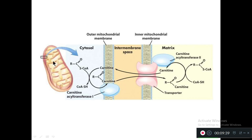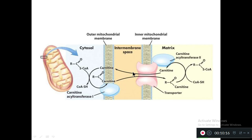This diagram represents the cytosol and the mitochondria, showing the entry via the carnitine shuttle. The outer and inner mitochondrial membranes are shown, along with the transporter that allows the carnitine shuttle to travel through. The CoA is separated in the matrix, and carnitine returns via acyltransferase. This diagram can be drawn in the exam.